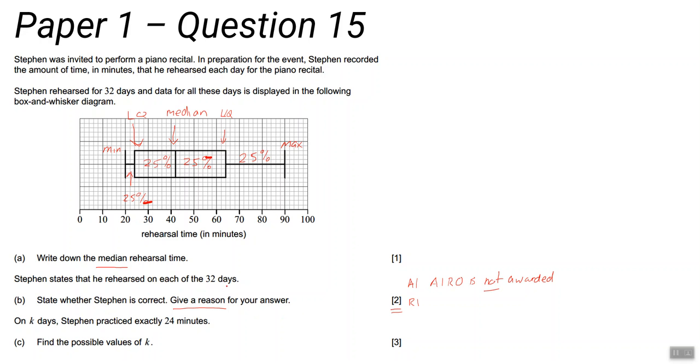It says he rehearsed on each of 32 days. If he didn't rehearse, it means the time of his rehearsal was zero. Are there any days that could have been zero minutes rehearsal time? If there are, then we don't know if he's correct. If there aren't, then he is correct. So that's what you need to look at.